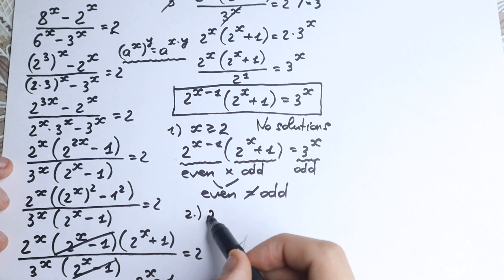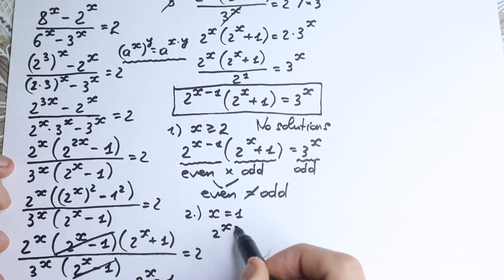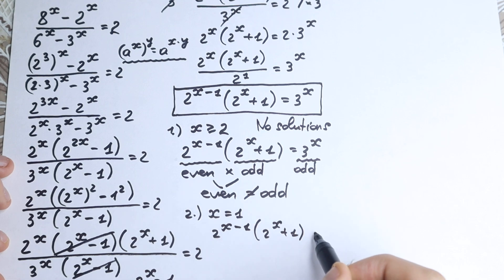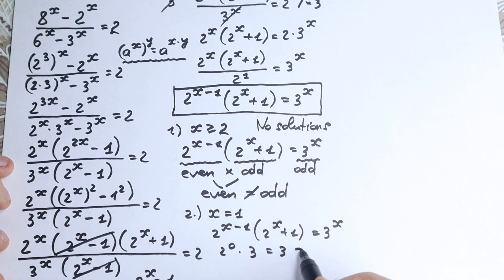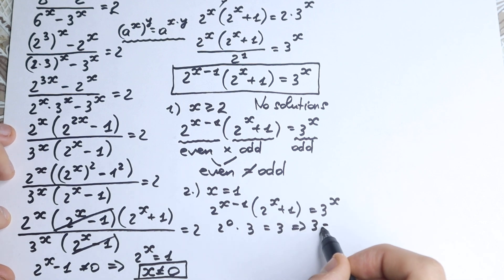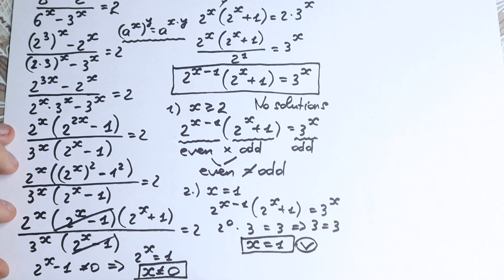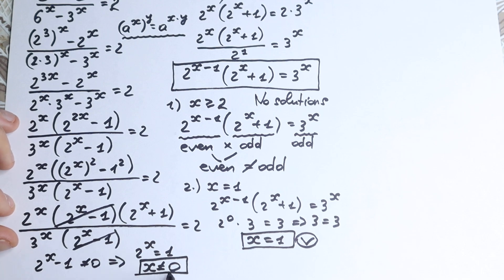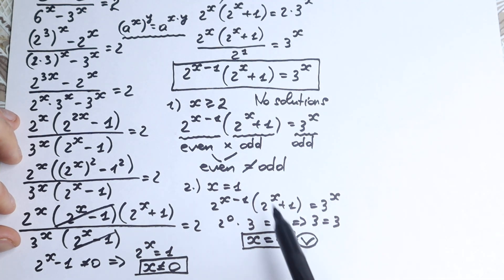Next, let's check x equal to 1. Plugging in: 2 to the power (1 minus 1) times 2 to the power (1 plus 1) equals 2 to the 0 times 2 to the 2, which is 1 times 4... wait — more precisely, we get 2 to the 0 times 3, giving 1 times 3 equal to 3 to the first power. That is 3 equals 3, which is correct. So x equals 1 is a valid root. Since x cannot be 0 and x ≥ 2 gives no solutions, only negative values remain to check.